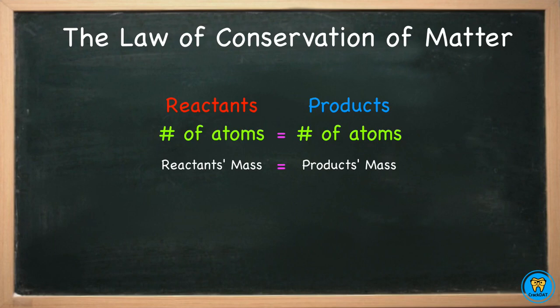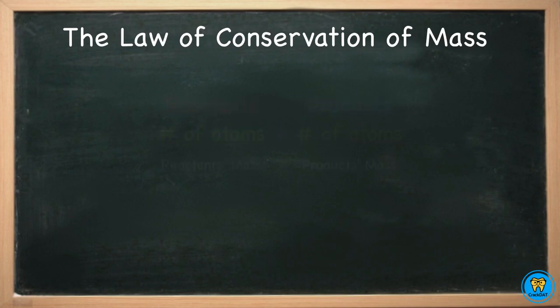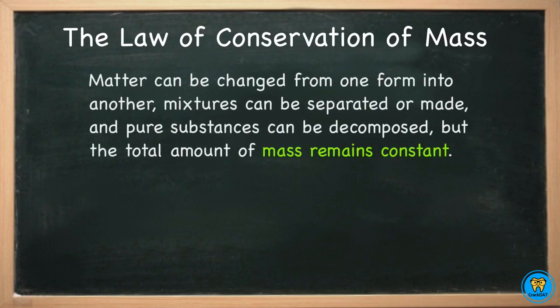This phenomena is referred to as the law of conservation of mass. The law of conservation of mass states that matter can be changed from one form into another, mixtures can be separated or made, and pure substances can be decomposed. But the total amount of mass remains constant.